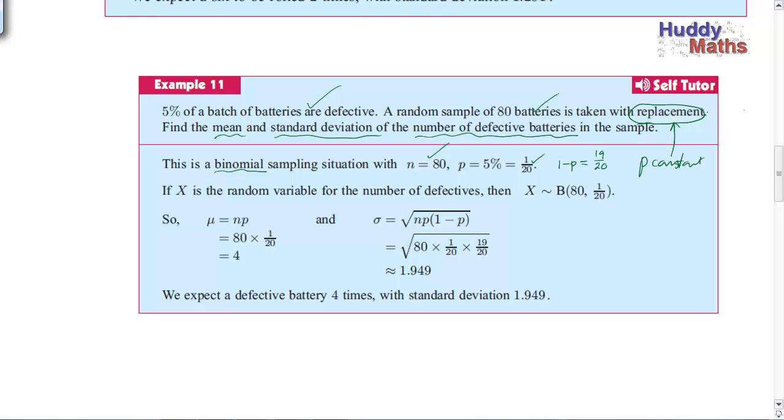Here we are. We replace the batteries. So the probability of getting a faulty battery remains constant. That's an important property of the binomial, isn't it? So what is our statement? The random variable X, which is the number of defectives, is distributed as a binomial distribution with 80 trials and the probability of defective 1 in 20. Come over here.